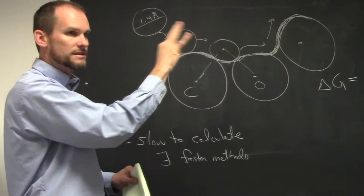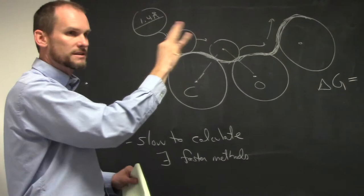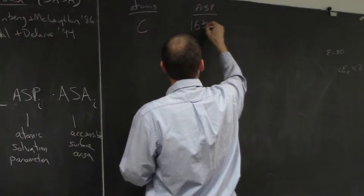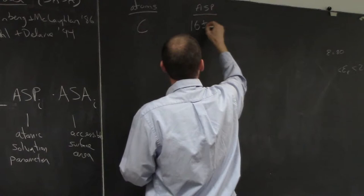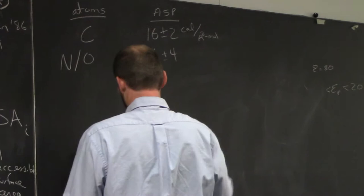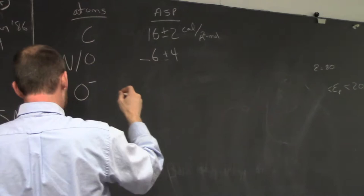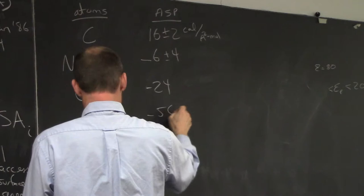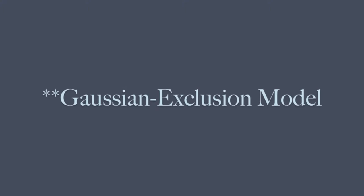Looking at the atomic solvation parameters: carbon is +16 ± 2 cal/(Å²·mol), nitrogen and oxygen are -6 ± 4 for neutral atoms, charged oxygen is -24, charged nitrogen is -50, and sulfur is hydrophobic at +21. Negative values want to be exposed to solvent; positive values do not. This is one algorithm used in Rosetta, but typically only at the end of a calculation because it's slower - during a calculation we need something faster.